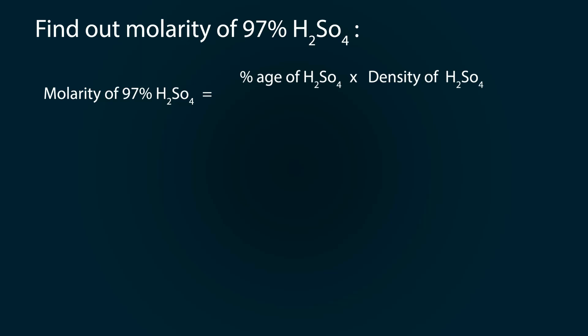You can find it by the formula: molarity of 97% H2SO4 equals percentage of H2SO4 multiplied by its density, whole divided by the molar weight of H2SO4 multiplied by 10.